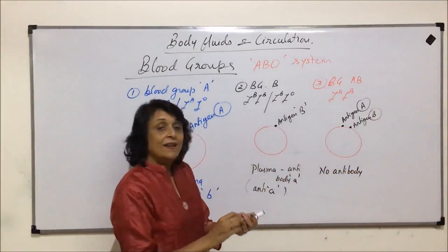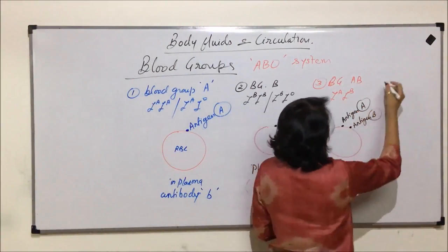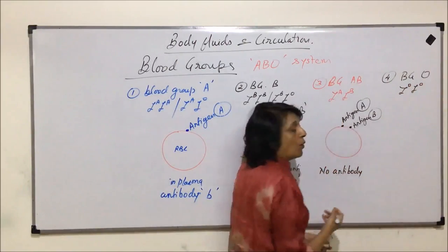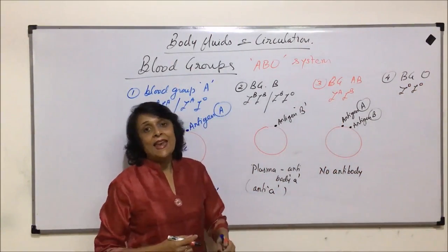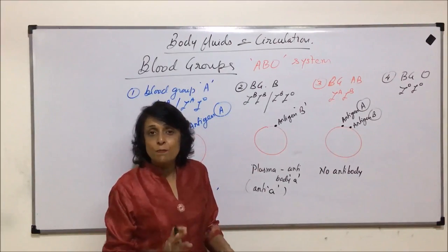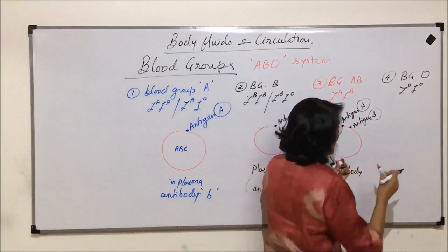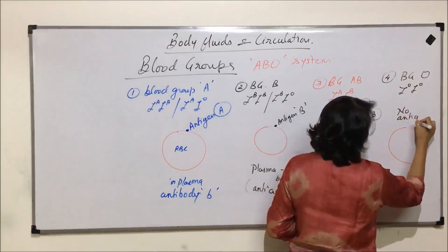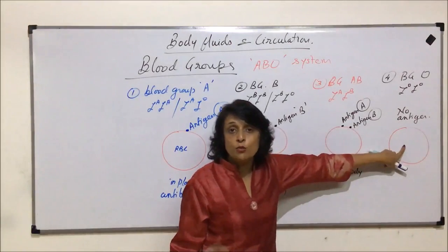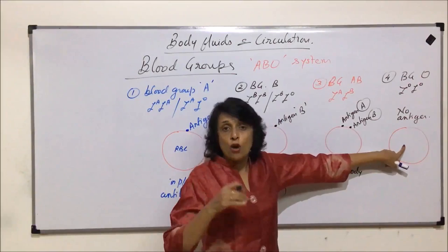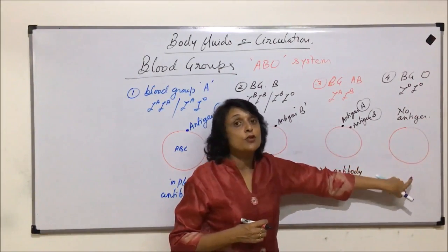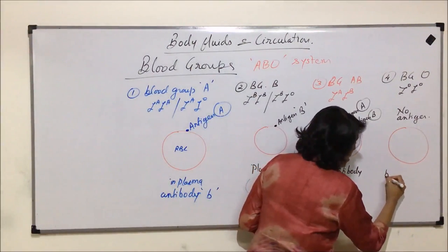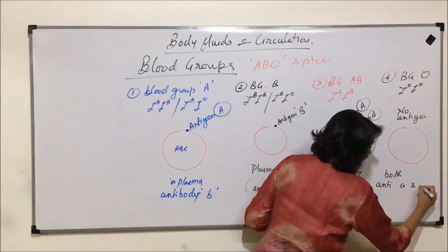For blood group O, there is only one possible genotype: IO IO — 100% recessive. Both alleles are recessive, so there is no transcription and no translation, meaning on the RBC there is no antigen — neither A nor B. For this individual, antigen A and antigen B from outside are both foreign or non-self, so the plasma contains both anti-a and anti-b.